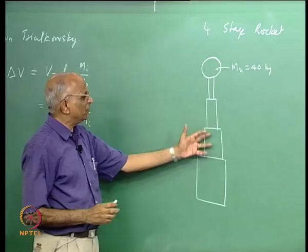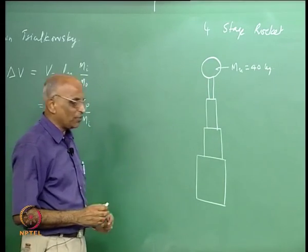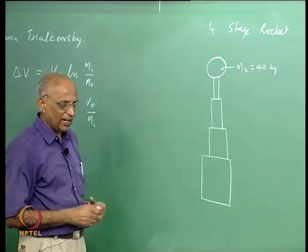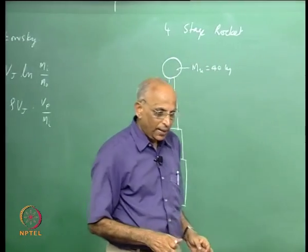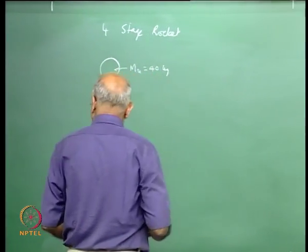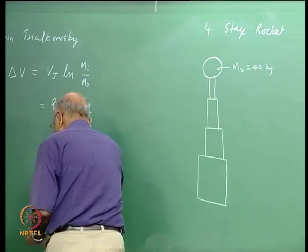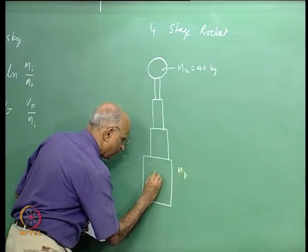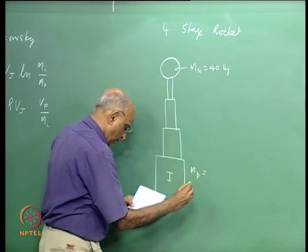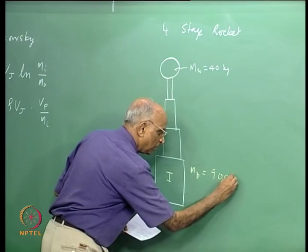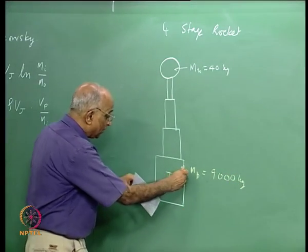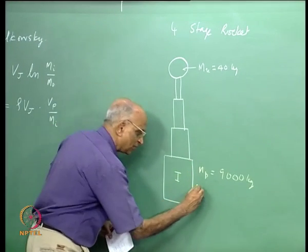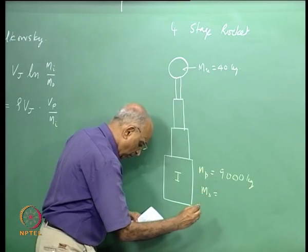What should be the weight of these stages? This is one of the launch vehicles we had in India — the numbers are representative, not exact. The first stage has a propellant mass of 9000 kg and a structural mass — casing and other inerts — of 1500 kg.